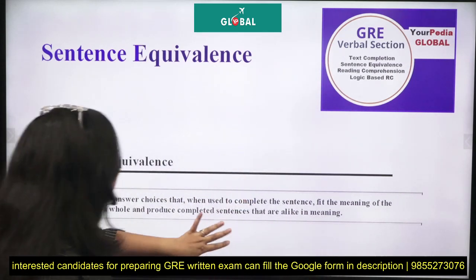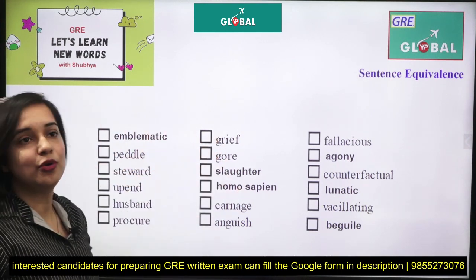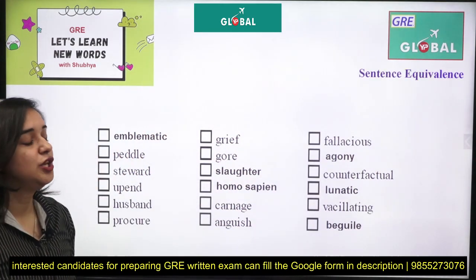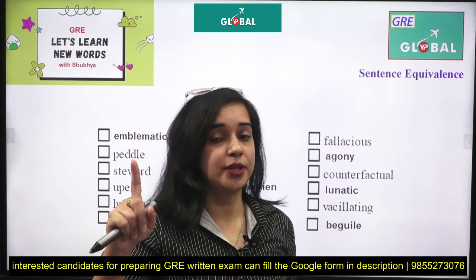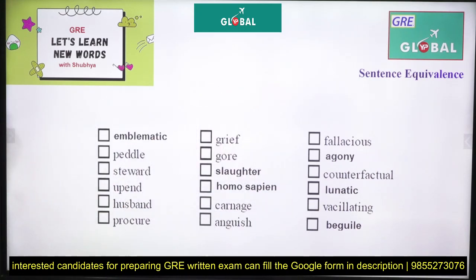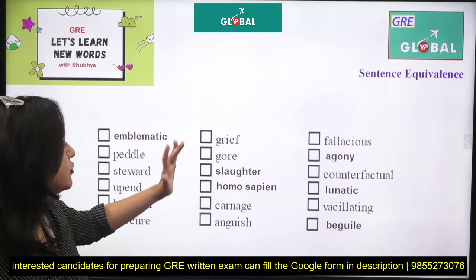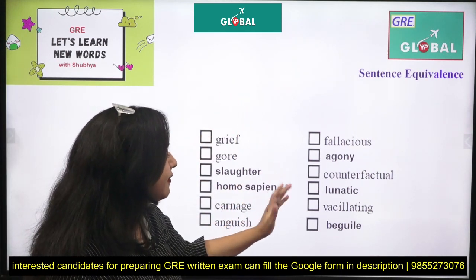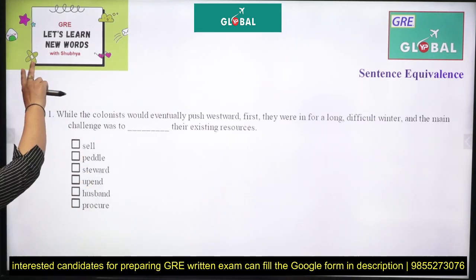By the end of this video you will learn 18 new words — six from each of the three exercises. The words introduced today include: emblematic, paddle, steward, append, husband, procure, grief, gore, slaughter, homo sapien, carnage, anguish, fallacious, agony, counterfactual, lunatic, facilitating, and evolving.